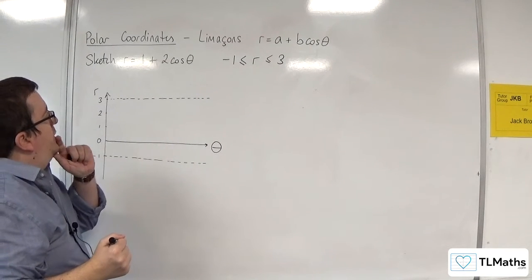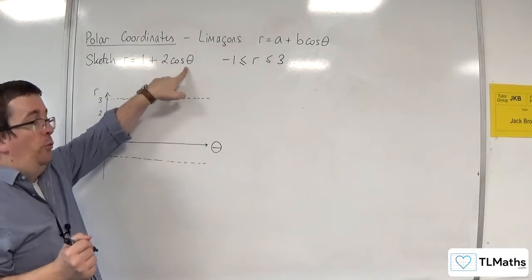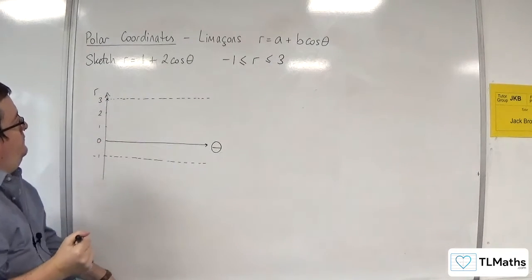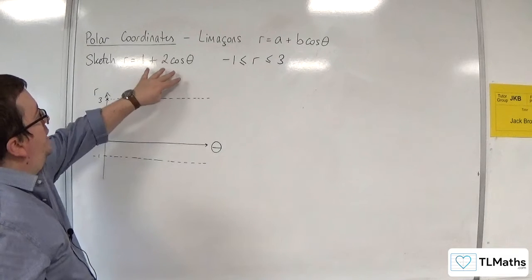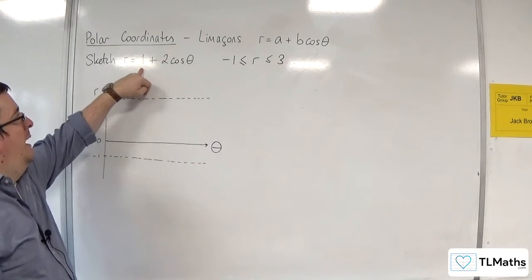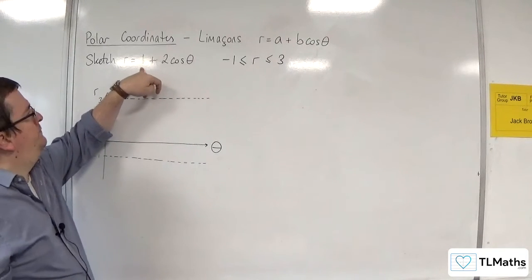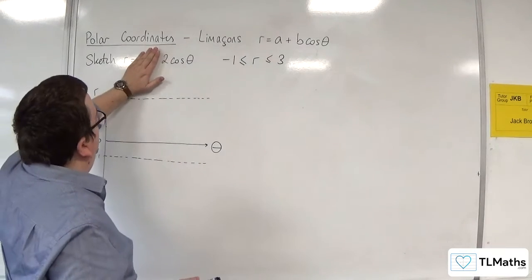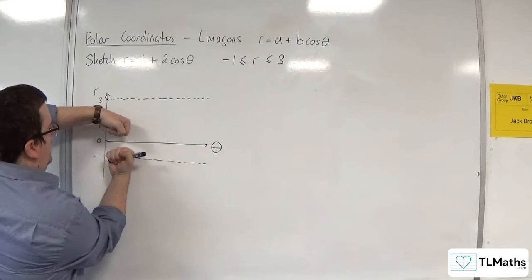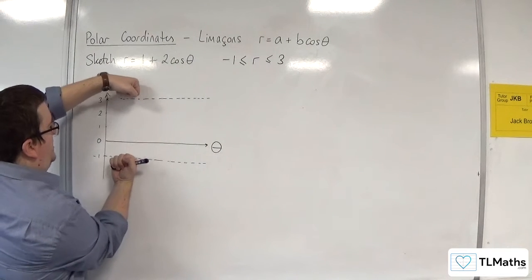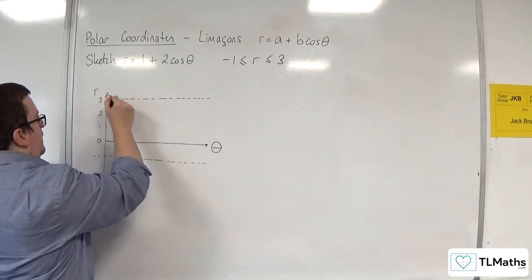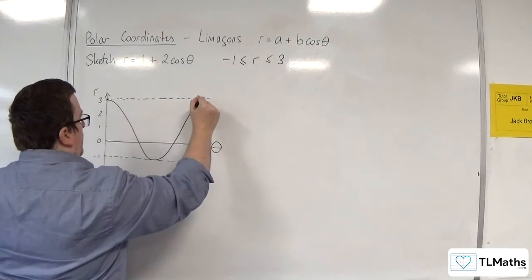So what is this going to look like? Well, at theta is 0, cosine of 0 is 1. So we start at 1 plus 2 lots of 1. So that means we're starting up here. And this makes sense because what we've got here is a cosine curve that has been stretched parallel to the r-axis, in this case, by factor 2, and translated by the vector 0, 1. So if we do the stretch first and then the translation, that's what it's going to look like. So originally it would look between minus 1 and 1. Then it's been stretched to minus 2 and 2. And then it's been translated up. So it's now between minus 1 and 3.